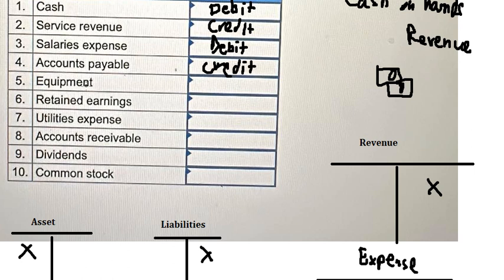Equipment — that is an asset, so we put it on debit. Retained earnings, just like revenue, should be on credit.